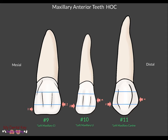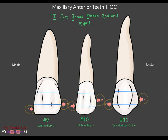A good way to remember the height of contours for the maxillary anterior teeth is using the mnemonic: 'I just jacked Michael Jackson's moped,' which stands for incisal, junction, junction, middle, junction, middle — starting from the mesial and reading distally. The height of contour on the mesial will be at the junction of the incisal and middle third, and the height of contour on the distal is in the middle third.